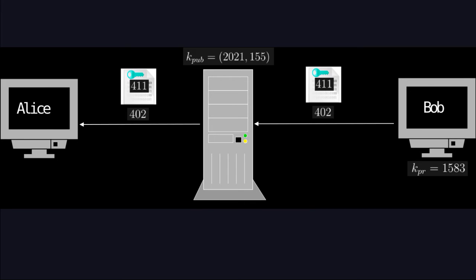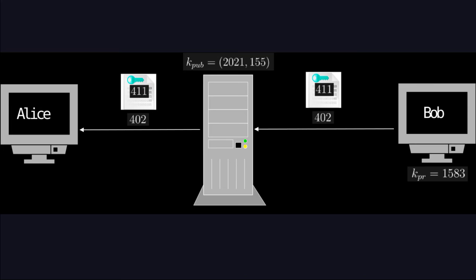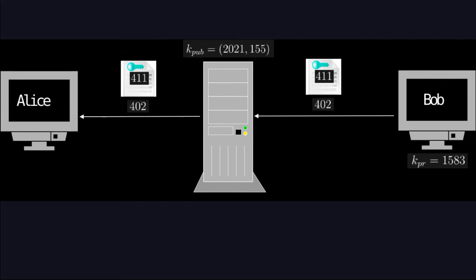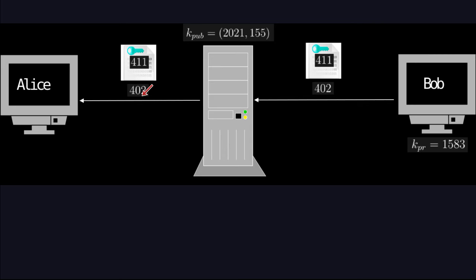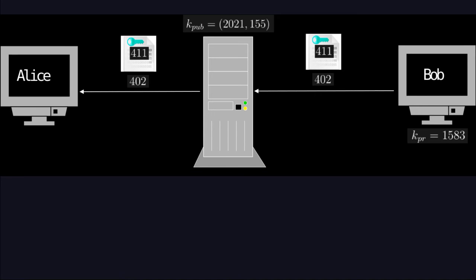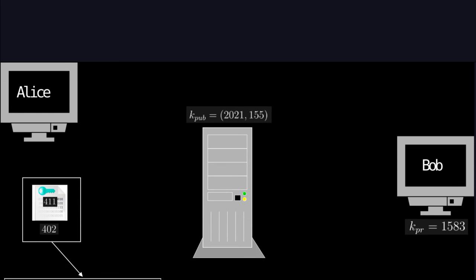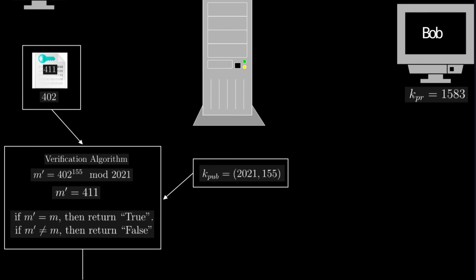Alice receives the message-signature pair and can verify it. The only information she needs is the public key: the modulus n and public exponent E. Since the public key is public, anyone can verify the signature — not just Alice. The verification algorithm computes m' = s^E mod n = 402^155 mod 2021.